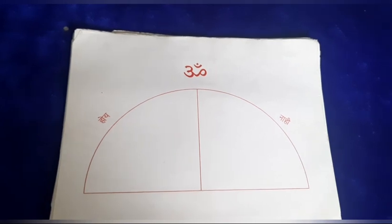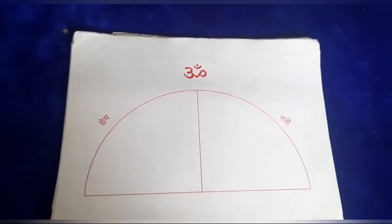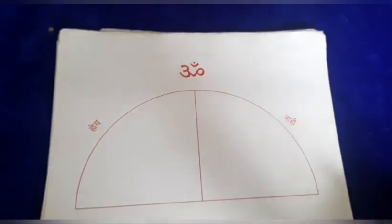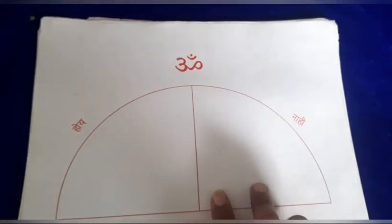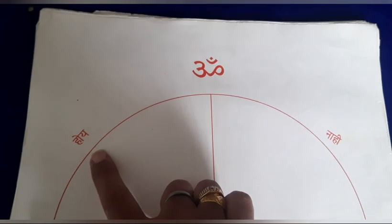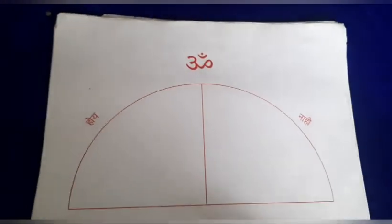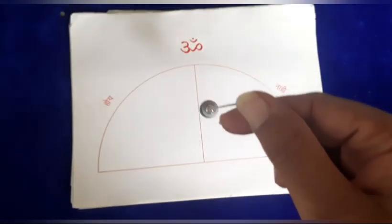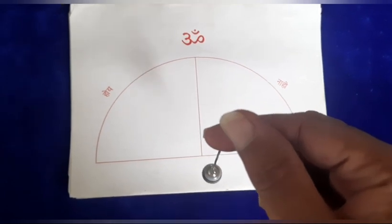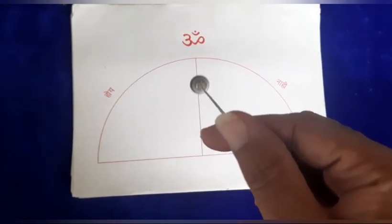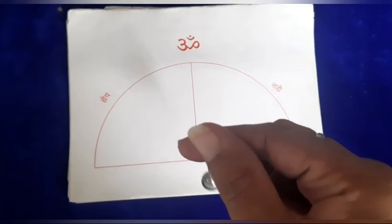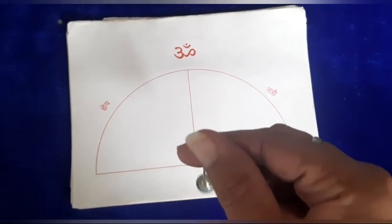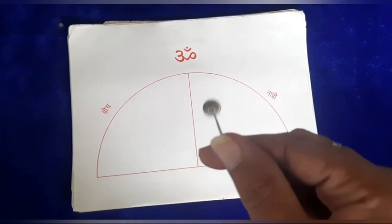You must have seen me doing pendulum dowsing on videos, but here I would like to show you some charts which I use for pendulum dowsing. This is a yes/no chart — it is written in Marathi, 'hoi nahi', but yes, this gives a yes or no answer. Right now it is neutral, but if I say 'show me yes' — look, it started moving towards yes. 'Show me no' — it started moving towards no.